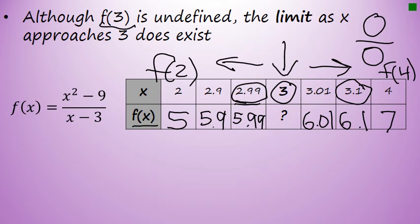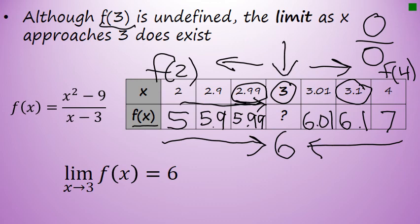As I approached 3 from the left—from numbers that are smaller than 3—it looks like those values for f(x) are approaching 6. And from the right, when I evaluated numbers that were a little bit bigger than 3, they were also approaching 6. And because both of those are the case, I can say that the limit as x approaches 3 of f(x) equals 6.